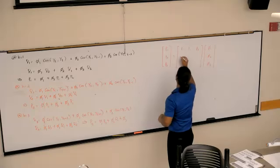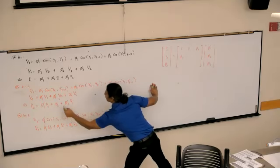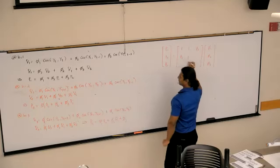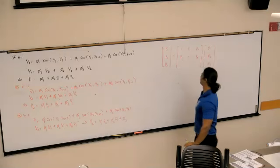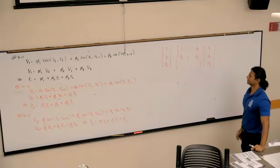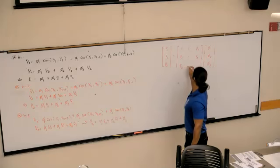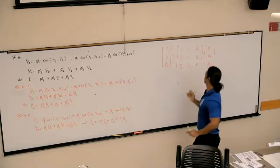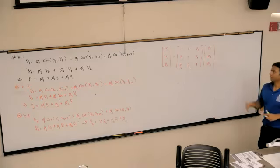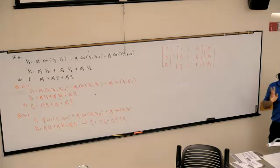Second. Rho 1, 1, rho 1. Last one. Rho 2, rho 1, 1. And you can see the matrix is symmetric.